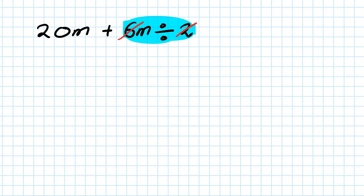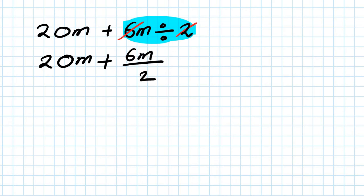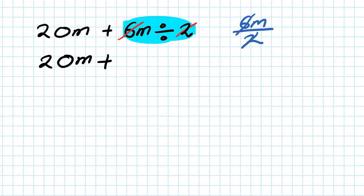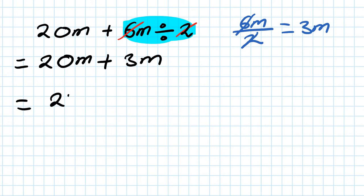You can write it as a fraction first if you're not very good with this — like plus 6m over 2. Or if you're comfortable, you can just do 6m over 2 equals 3m. So this is plus 3m. Then just collect like terms: 20m plus 3m is 23m.